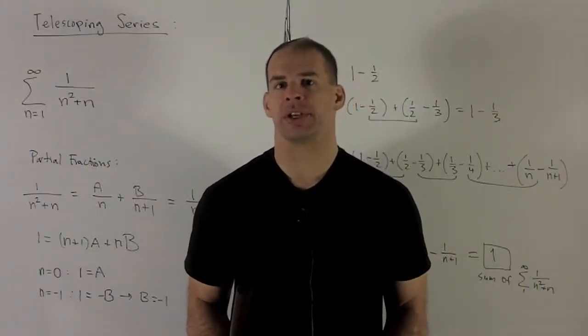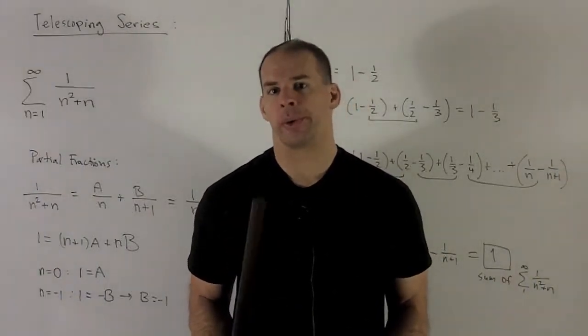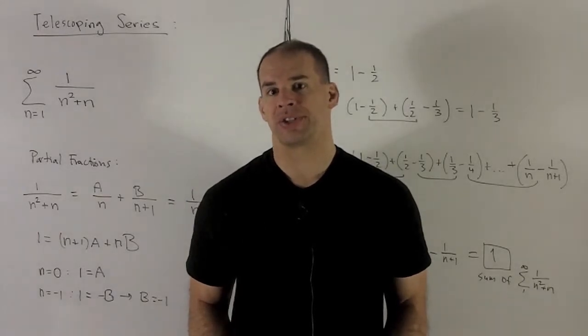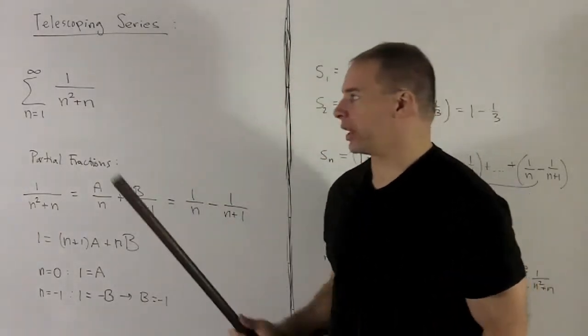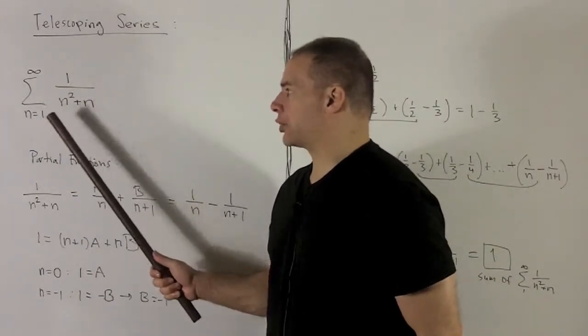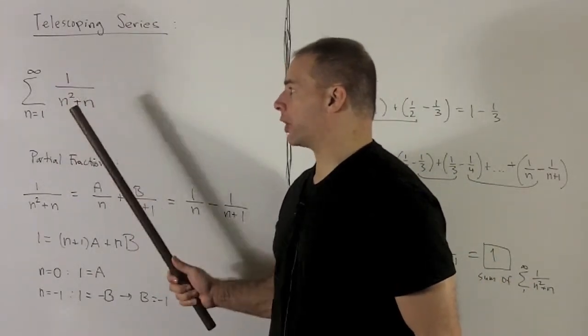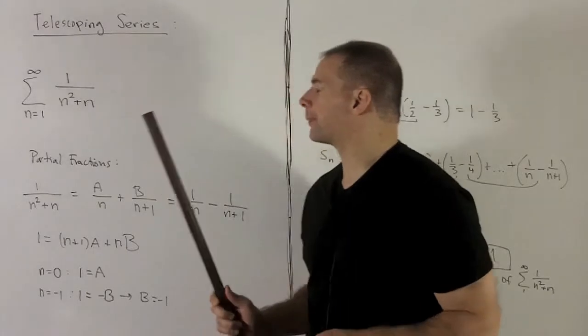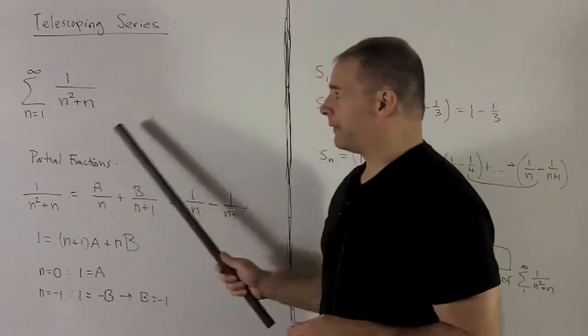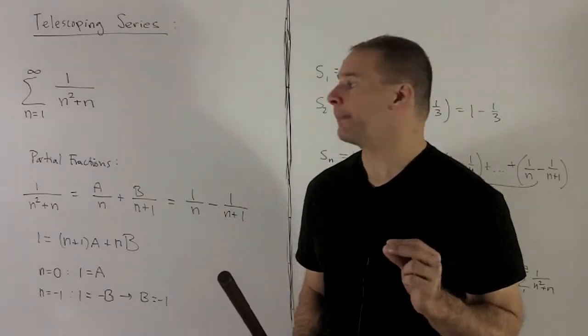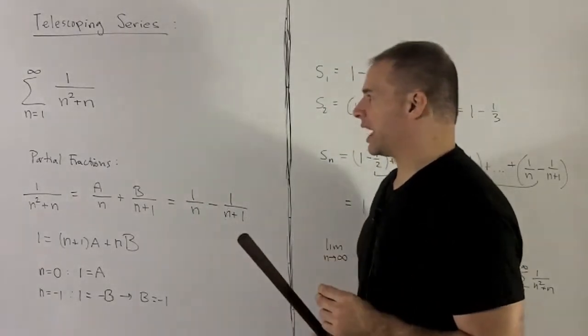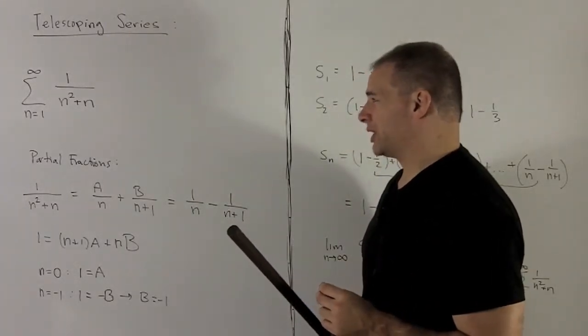In addition to the geometric series, another type of series where we can get concrete results for the sum is the telescoping series. So let's consider the sum n goes from 1 to infinity, 1 over n squared plus n. We want to figure out what we can do with this with what little techniques we have at this time. It's definitely not a geometric series, so let's see what we can do.